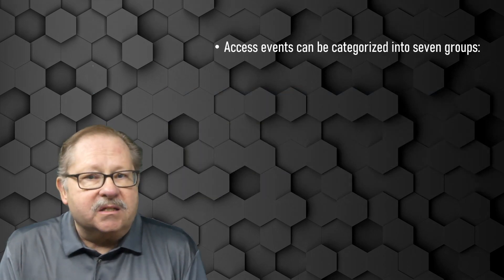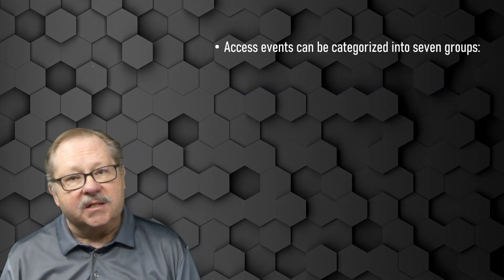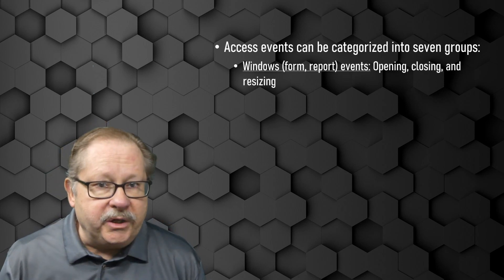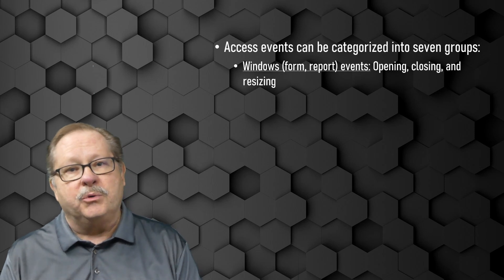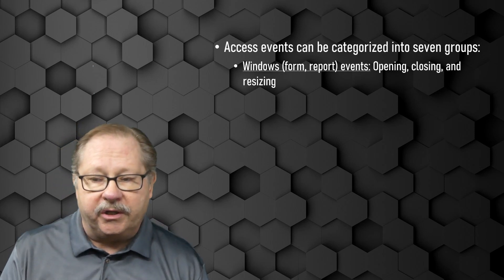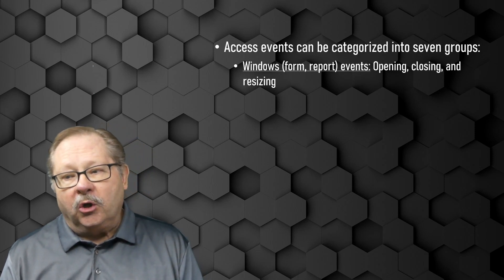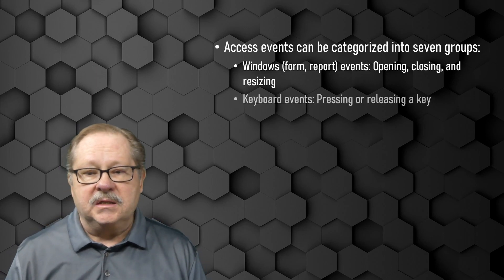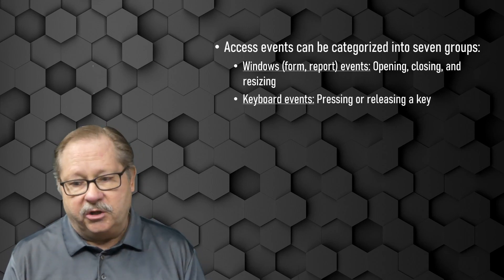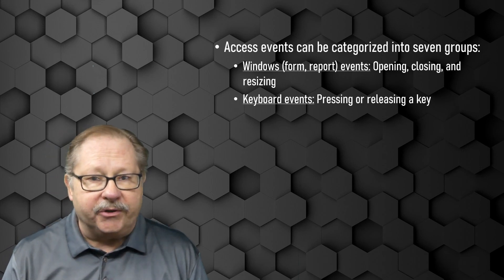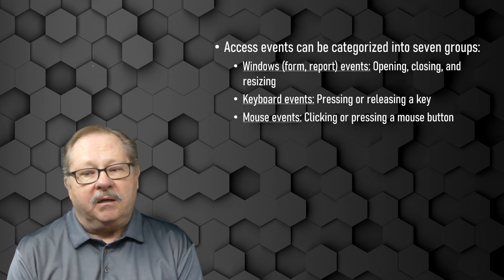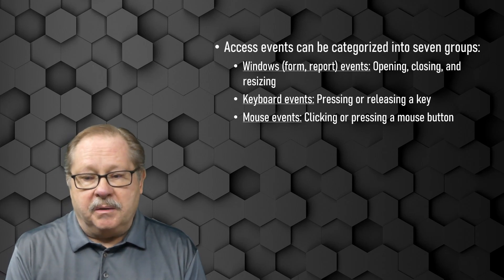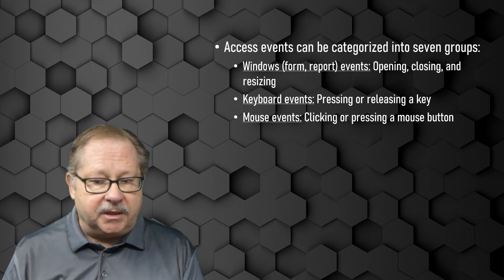Access events can be categorized into seven different groups. The first group is windows — a form or a report that's in a window in your Access application. Opening, closing, and resizing that window are some of those events. Keyboard events involve pressing or releasing a key on your keyboard. Mouse events, as illustrated, include clicking or pressing a mouse button.